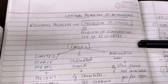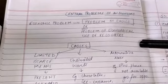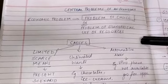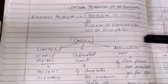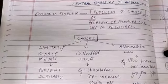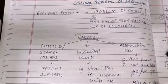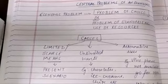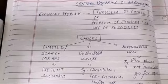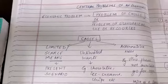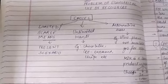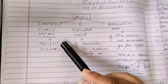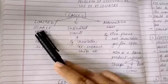For example, in the current scenario you can find that certain items are not available — like milk products or chocolates — or they are limited to an extent. So how will we be using those resources? Basically, what are the causes of economic problems? The first cause is limited scarce resources, as we have discussed in our earlier lecture.